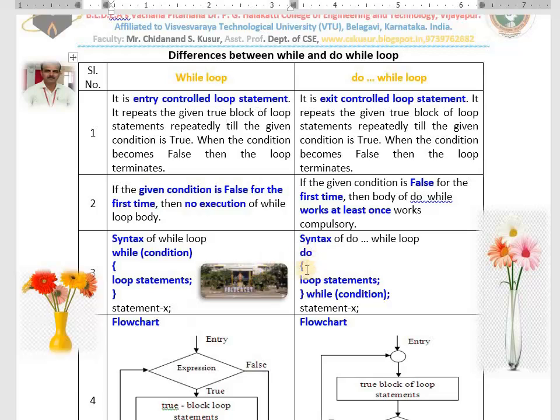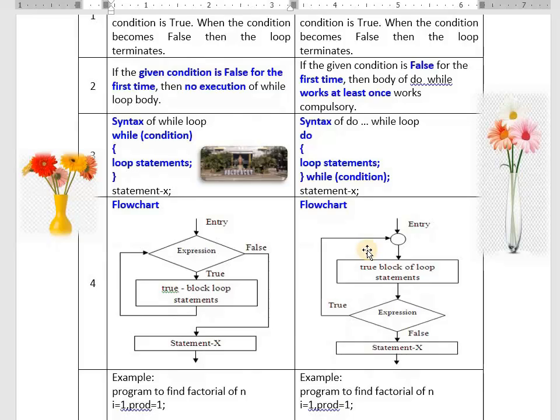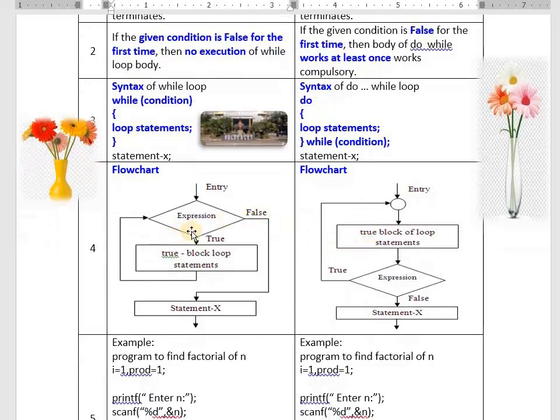Do is must. Then loop starts. Loop completes. Semicolon is must. Statements to be repeated. Then draw the flowchart of it. Diamond or rhombus is used to check the condition. If it is true, true block works.